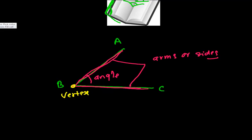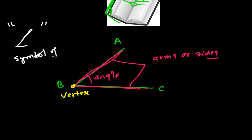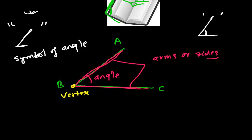Now I want to talk about symbolization — how we represent an angle symbolically. You can see in various books it's shown as a slanted line with a small horizontal line. This is the symbolic representation of angle. Sometimes you may see a similar symbol but cut in the middle — both are used, but generally we prefer the first form.